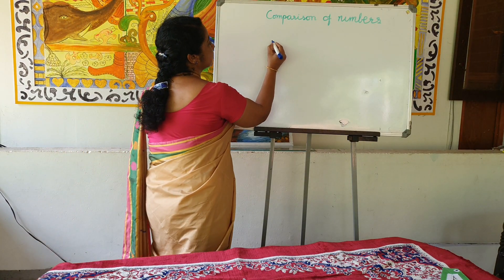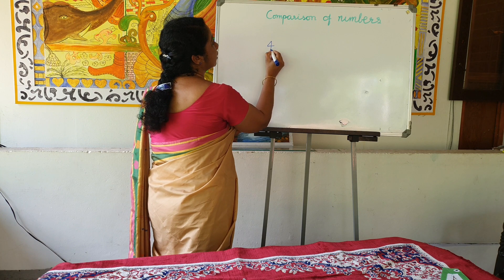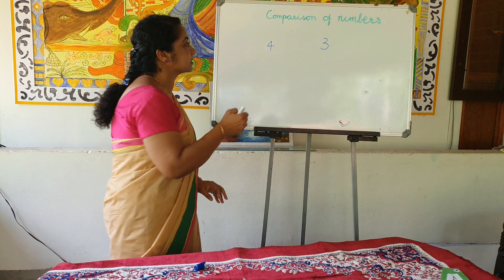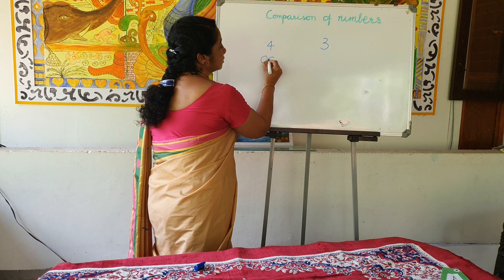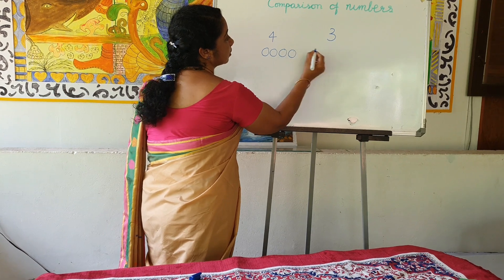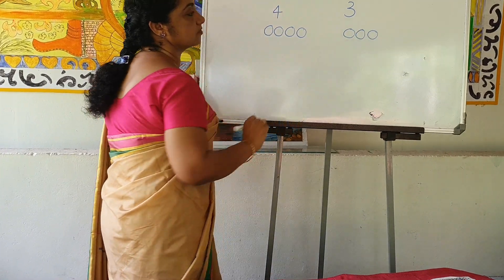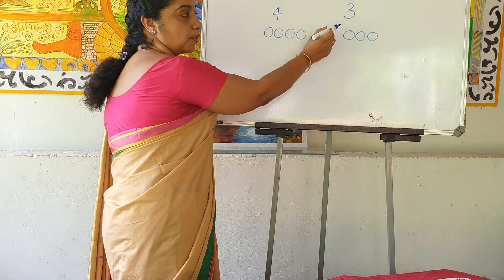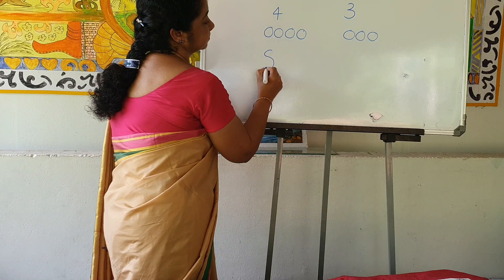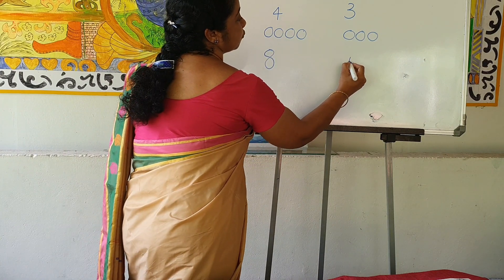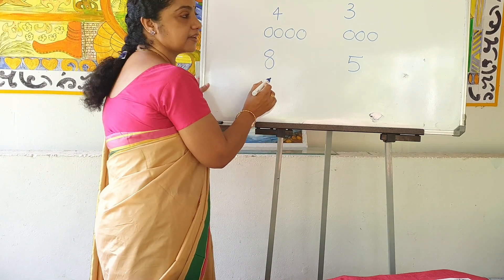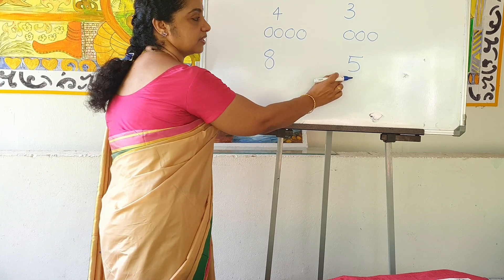Next we are going to compare numbers. Here are two numbers — 4 and 3. Which number is big? 4 is big and 3 is the small number. Again, 8 or 5 — which number is big? 8 is big and 5 is small.